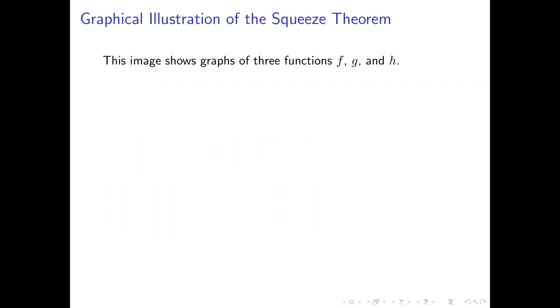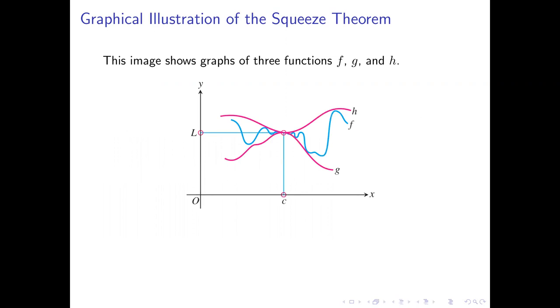We'll start by taking a look at a graphical illustration of what the squeeze theorem says. So let's say we've got three functions — call them f, g, and h — and take a look at this graph showing all three. On the top, in pink, you have the graph of h. On the bottom, also in pink, you have the graph of g. And in the middle, in between them in blue, you have the graph of f.